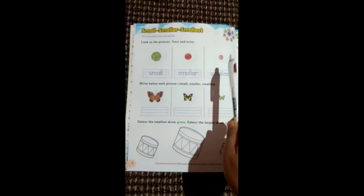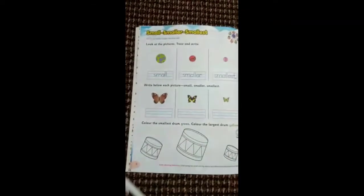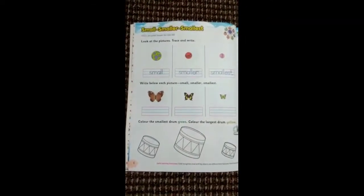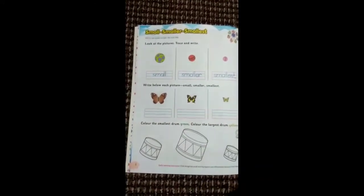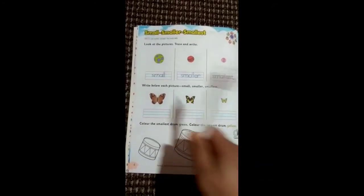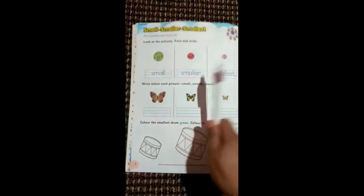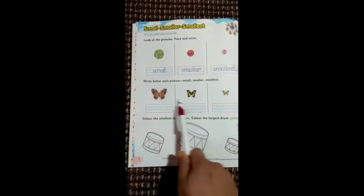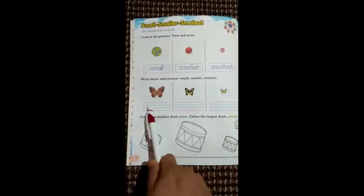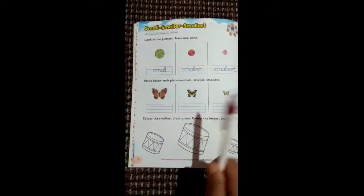So when we arrange the objects in order of their decreasing size, we use the term for the first one small, the second one smaller, and the third one smallest. Now you can see here three butterflies. Can you say which is small, which is smaller, and which is smallest?